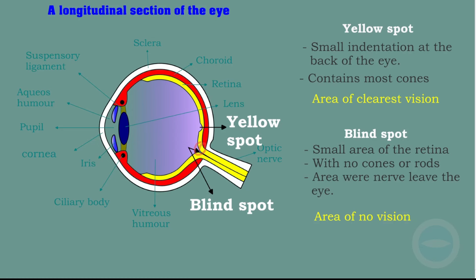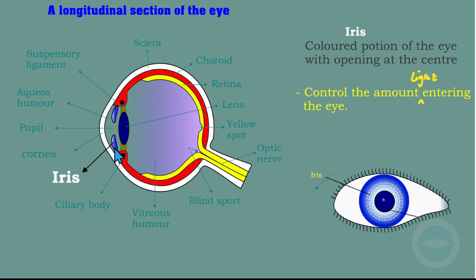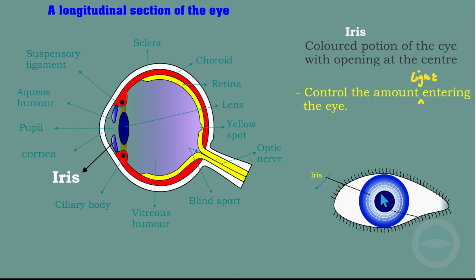The next part is the iris. In the longitudinal section, the iris appears as two structures on either side. In the front view, the iris is the coloured portion of the eye with an opening at the center. The function of the iris is that it controls the amount of light entering the eye — if it increases the pupil size, more light enters; if it decreases the pupil size, less light enters.